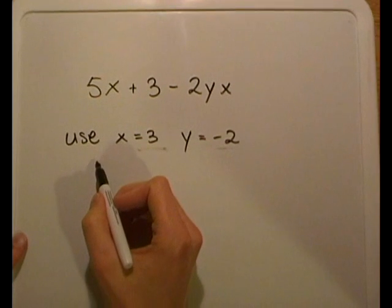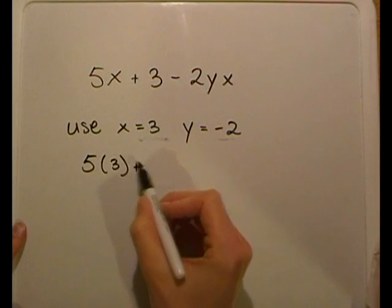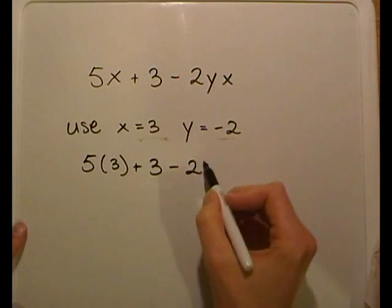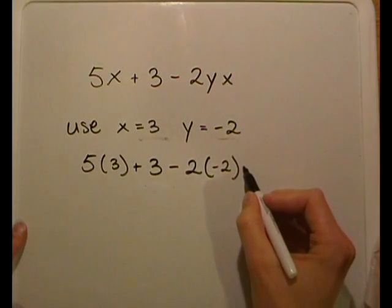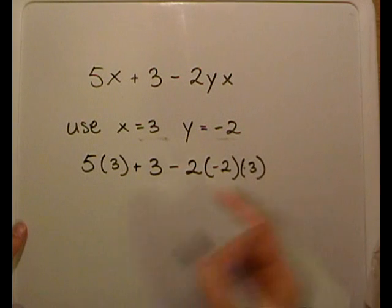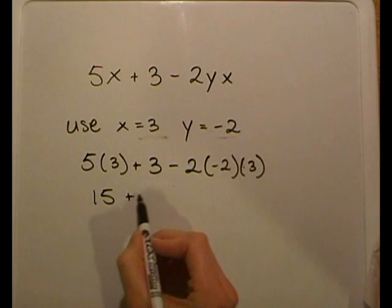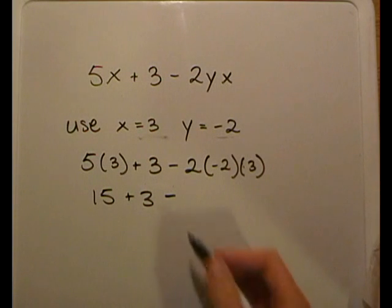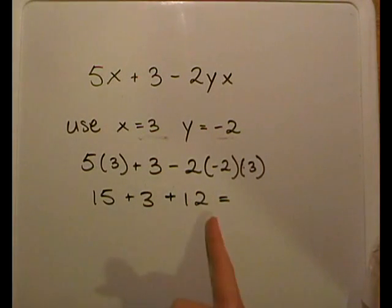So we have 5x, which turns out to be 5 times 3, since x equals 3, plus 3, minus 2 times y, which equals negative 2, times x, which equals 3. Now it's just a basic algebraic expression — we multiply this out and get our answer. 15 plus 3 minus 2 times negative 2 is 4; 4 times 3 is 12. So we get positive 12, and this equals 30.